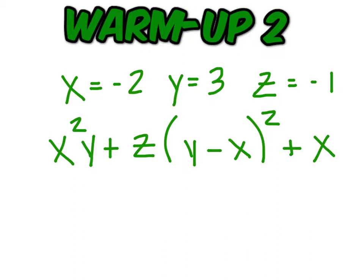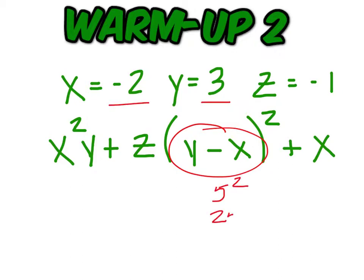For this one we're going to start right in here. y minus x, that's going to be 3 minus a negative 2, which is 5. If you square that, you get 25, and multiply that by z, which is negative 1, so you get a negative 25.